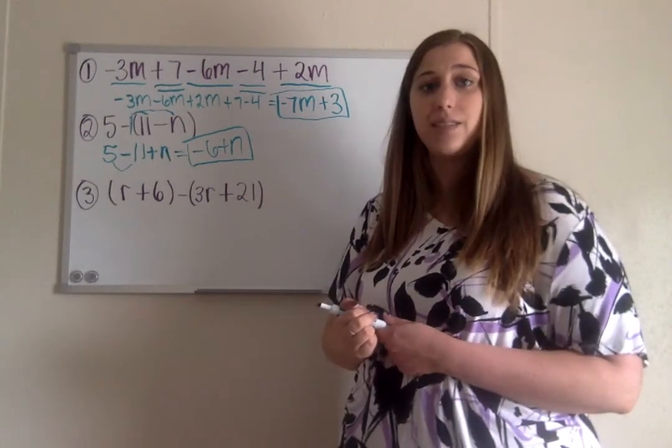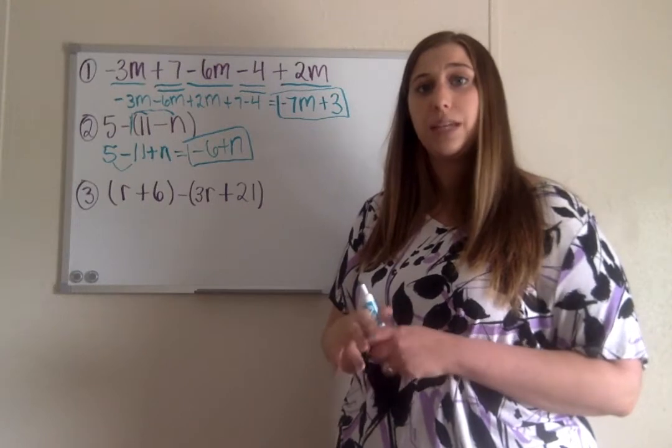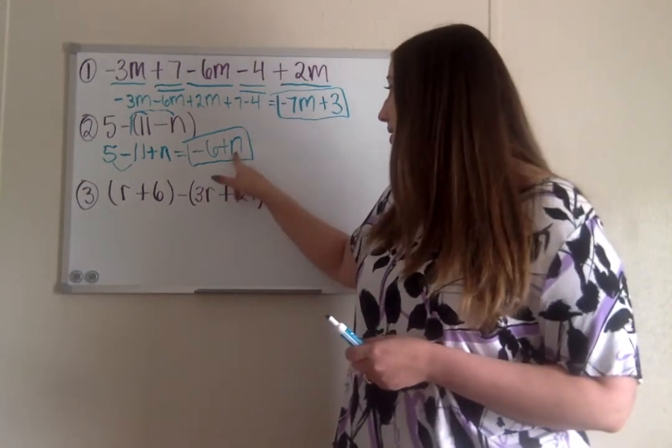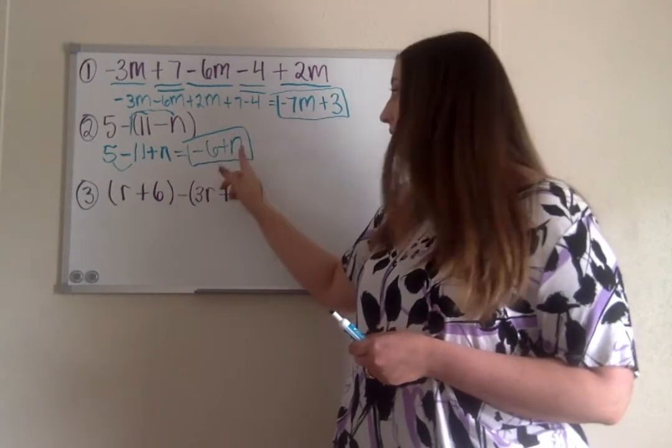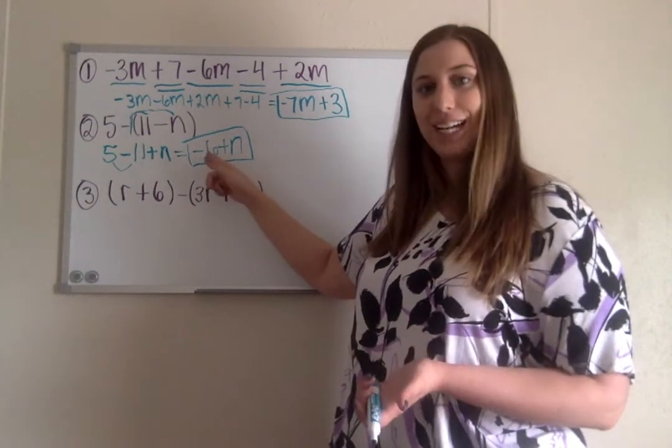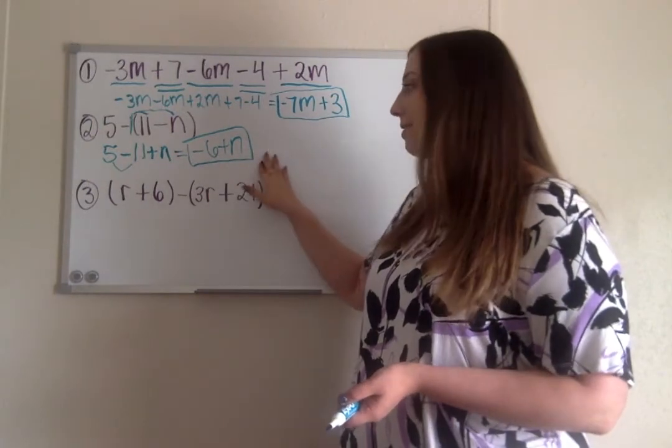And again, hopefully we realize that's as simple as our answer can go because negative 6 and n are two completely different terms. That's what we said back up in number one. This has a variable, this doesn't, so this is a variable that one doesn't have a variable, meaning they're different. We can't combine them and that is as simple as our answer will go.